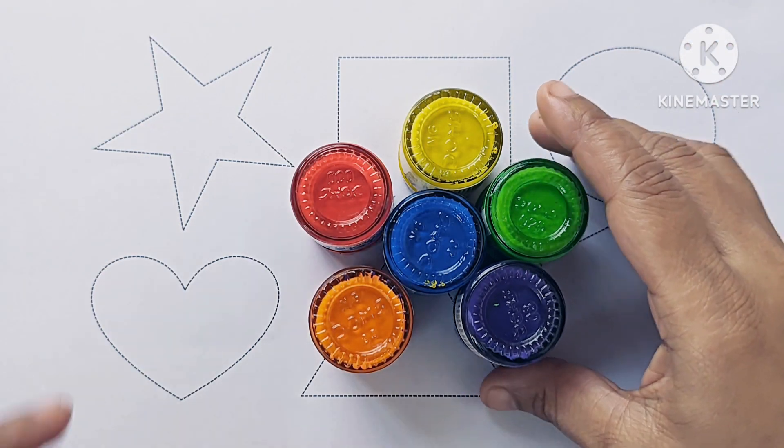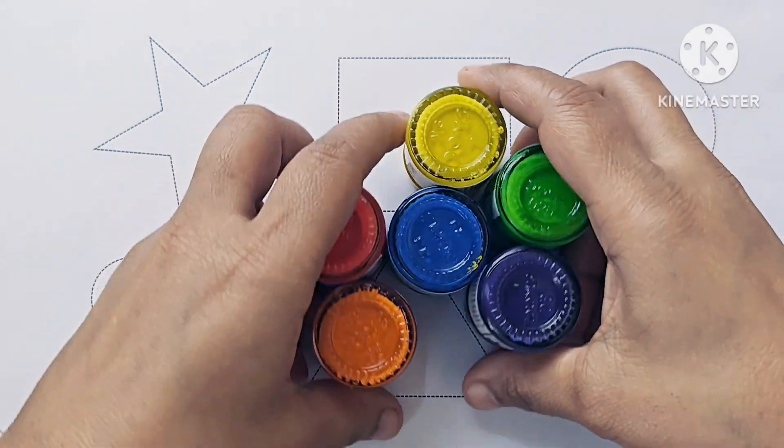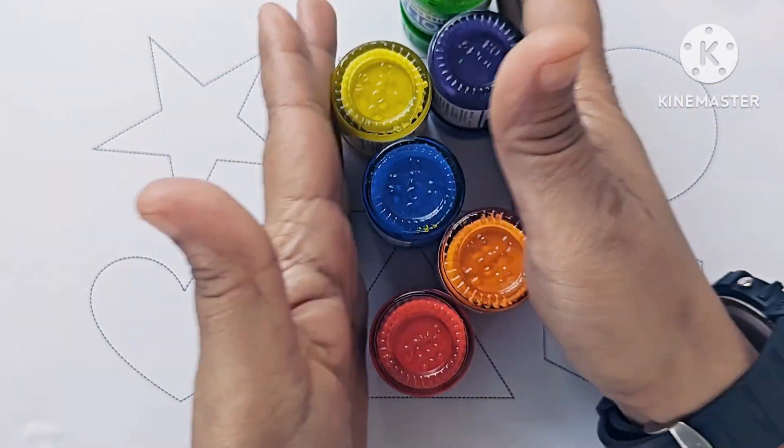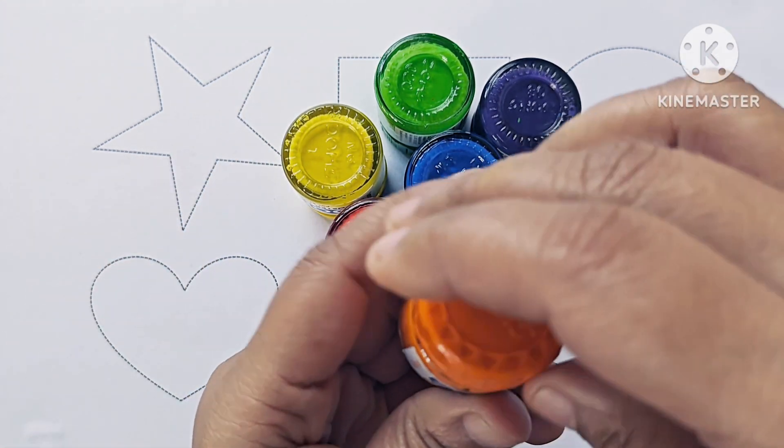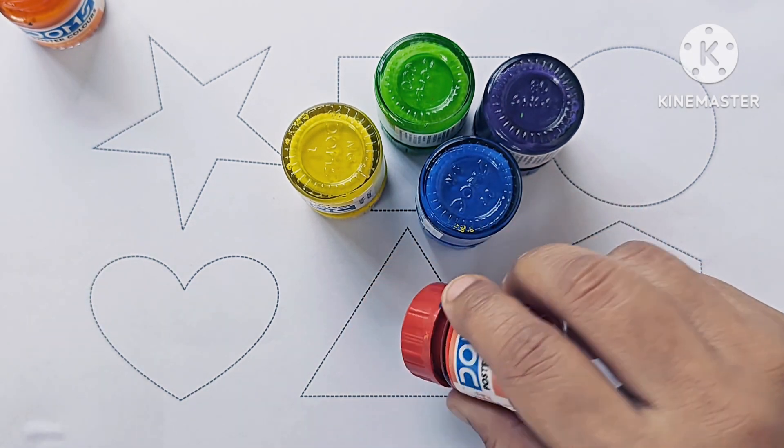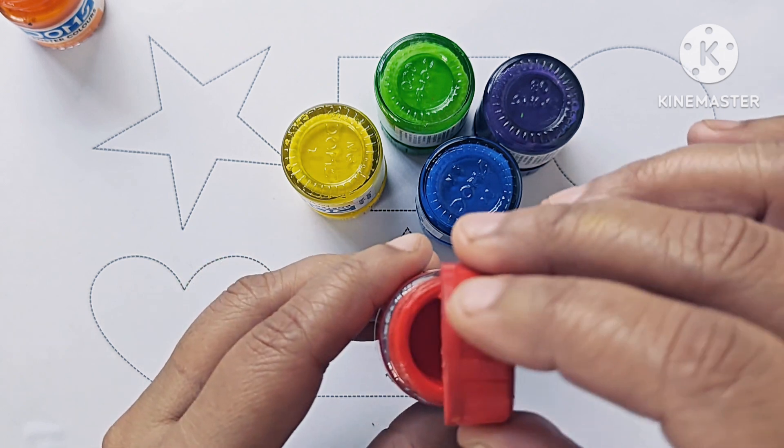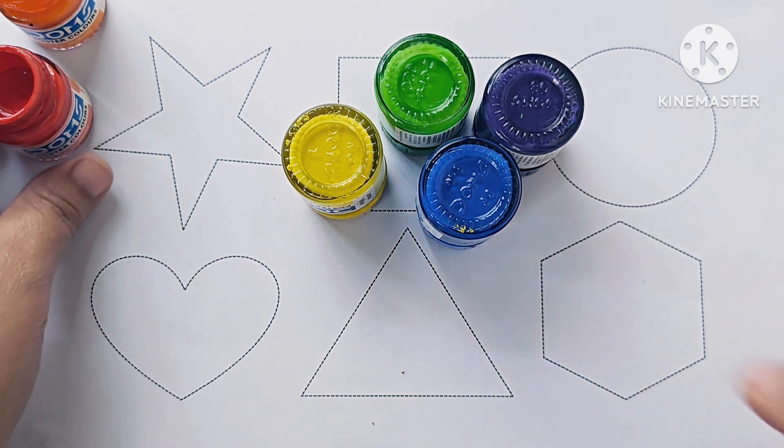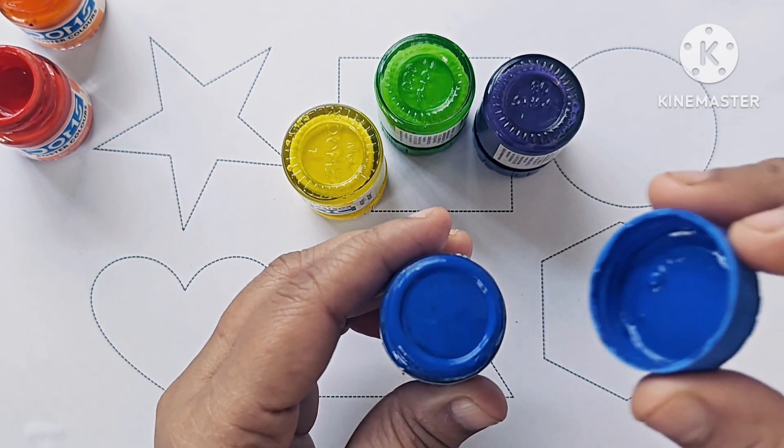Hello kids, let's learn some 2D shapes. These are our 2D shapes and these are our colors. These are our colors: orange, red, blue color.